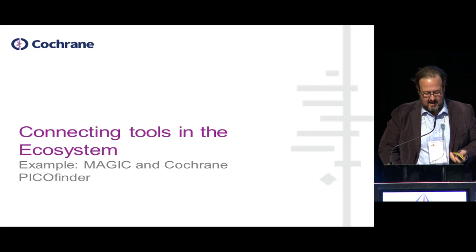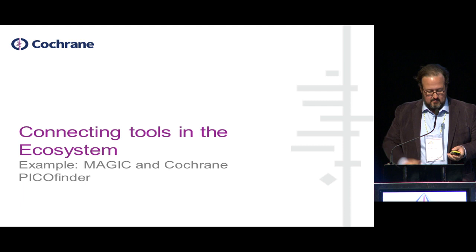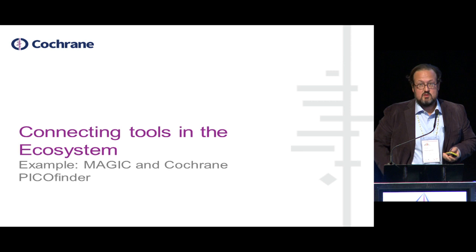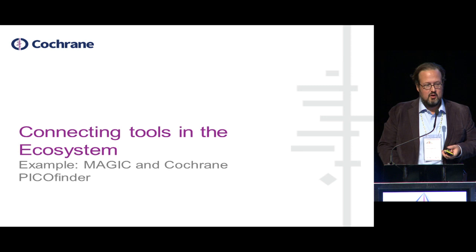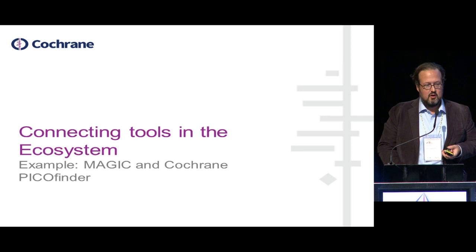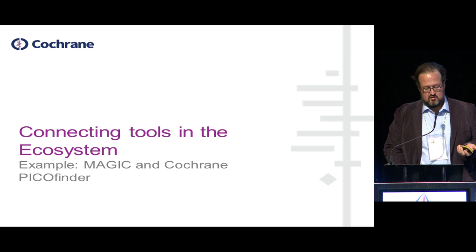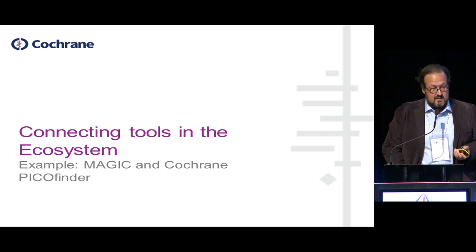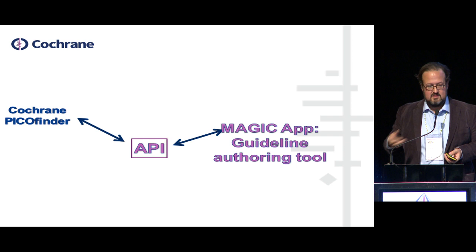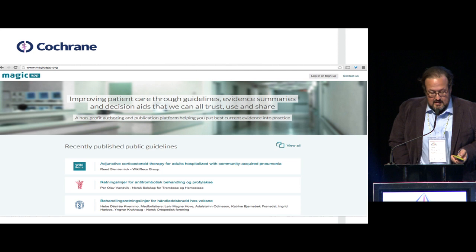In the remaining time I'll show some examples of the ecosystem in action at different points. When talking about platforms and tools, we need them to be more connected and data to flow. This is an example of connecting tools in the ecosystem via digitally structured data — from synthesis to recommendation into guideline development — connecting a tool called PicoFinder, which leverages the PicoLink data, servicing it using PICO questions that can be used by other applications such as the MAGIC app, a guideline authoring tool.